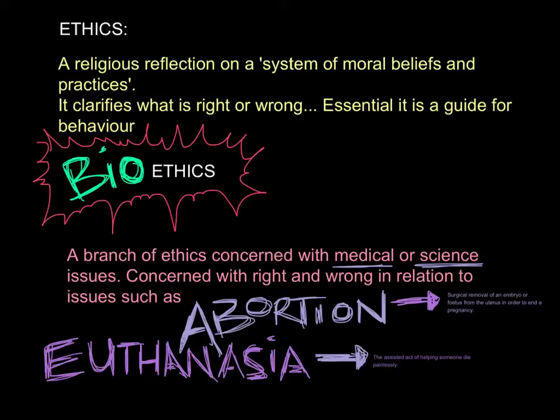Abortion is the surgical removal of an embryo or fetus from the uterus in order to end a pregnancy — a deliberate end to pregnancy. Euthanasia is the assisted act of helping someone die painlessly — making the decision to assist someone to die.